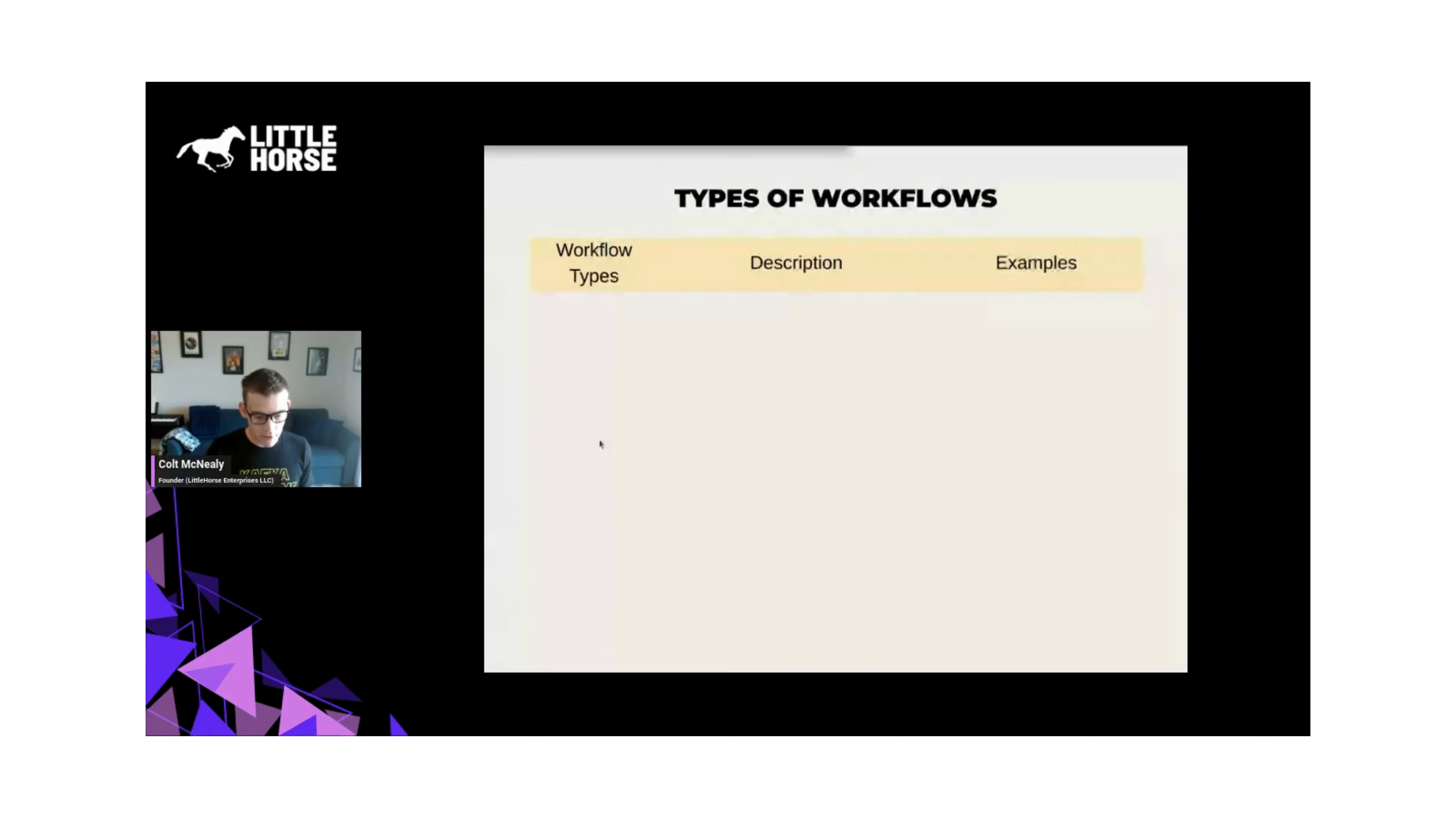So the first type of workflow that you're all probably familiar with is batch ETL jobs. So this is things like getting a dump of data every night, running it through some processing steps, putting it into some database, and eventually shipping it off into Snowflake. And some great systems in these areas are Airflow, Dagster, Prefect, and others.